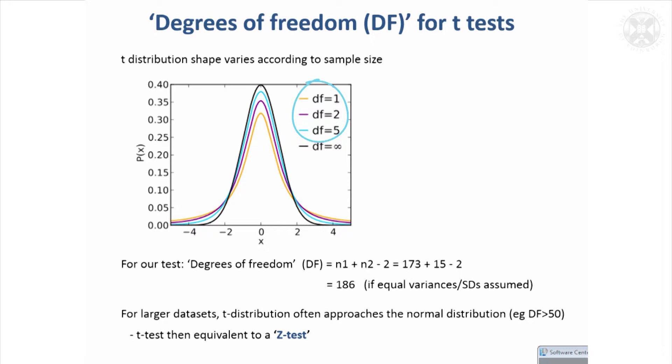It's going to give you a more accurate p-value if you get the right degrees of freedom. If you've got a very large data set, your degrees of freedom is approaching this black line where it's infinite, and that's in fact the normal distribution.